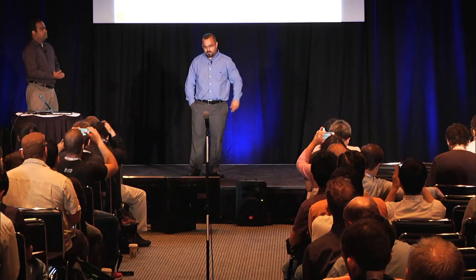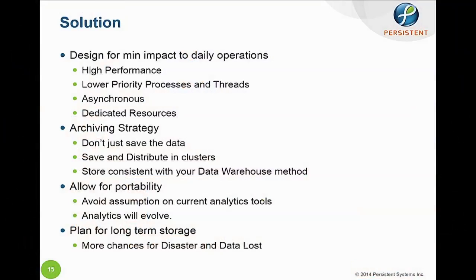The solutions we propose: design for minimum impact to daily operations. Even if you don't write Ceilometer code, you have control when you deploy it — where you deploy it, what network infrastructure surrounds it, what storage you attach. For example, don't run Ceilometer where Nova controllers are running — run Ceilometer off to the side. Ceilometer is a Linux service: you can change its process priority so it runs with lower priority than other high-priority processes.